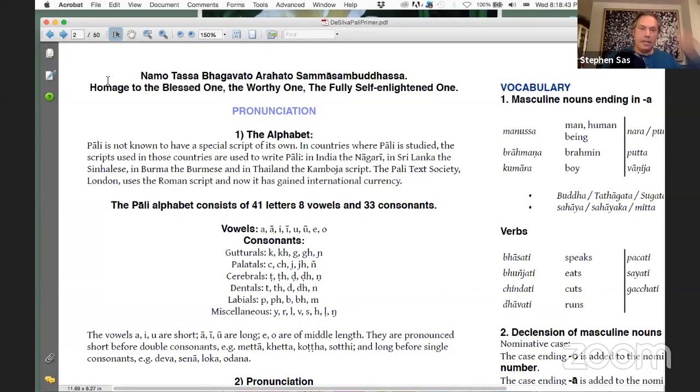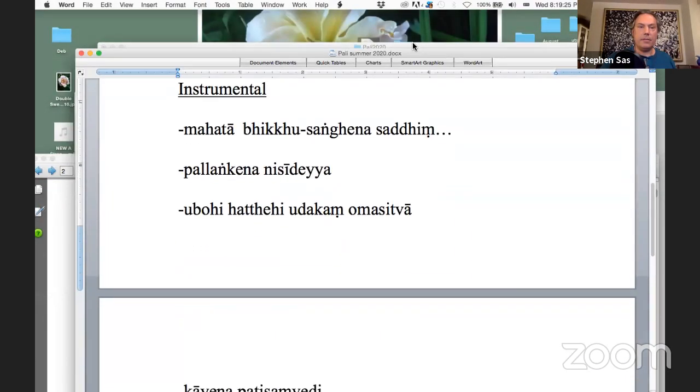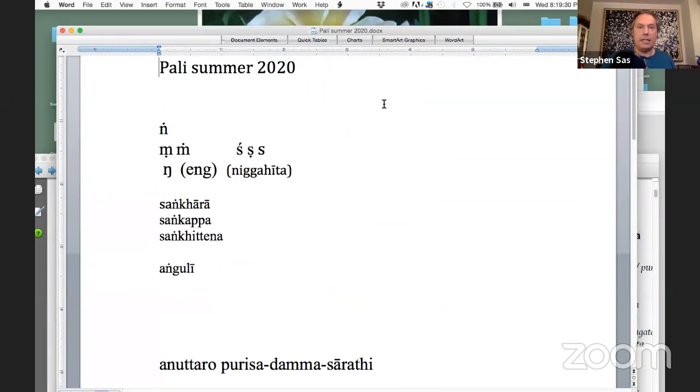Last time we were talking a bit about what Pali is and the alphabet, and two of the cases. We mentioned how there are eight cases in total in Pali. We covered the first two, nominative case and accusative case. And we looked a bit at the alphabet. I want to just look a little bit more at the alphabet.